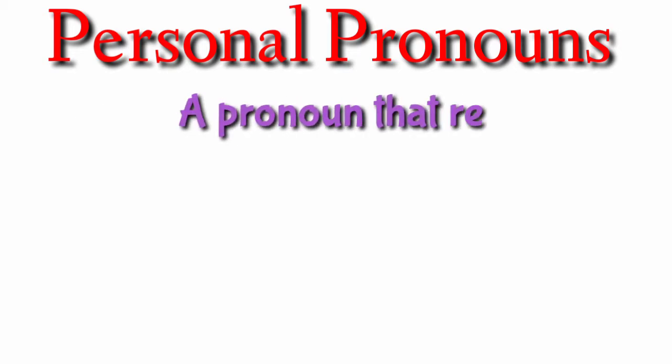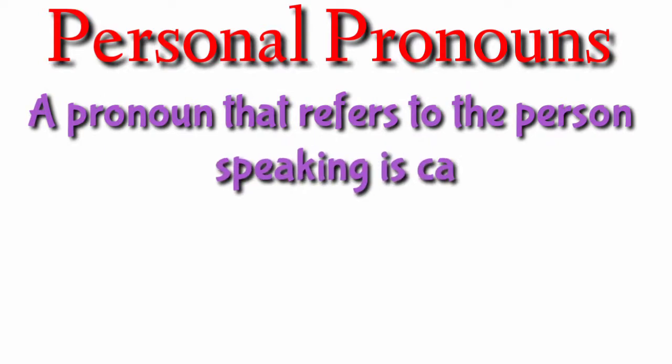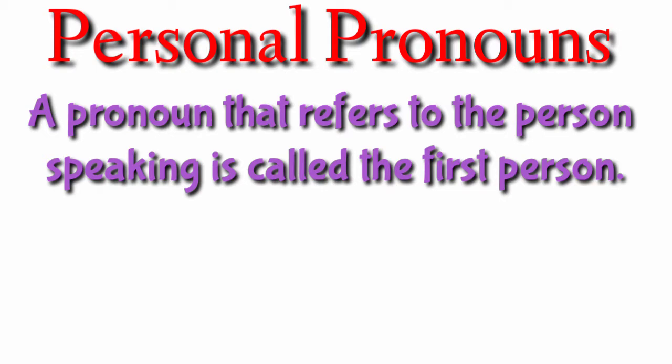A pronoun that refers to the person speaking is called the first person. We always think: speaker, listener, and they speak about someone else. The speaker is in the first person, the listener is in the second person, and the person they speak about is the third person. For example, 'I' and 'we' are in the first person — these are the pronouns of the first person.